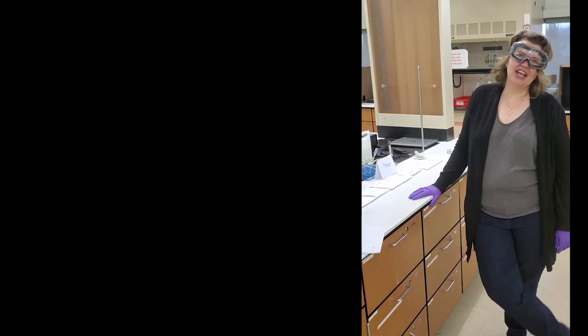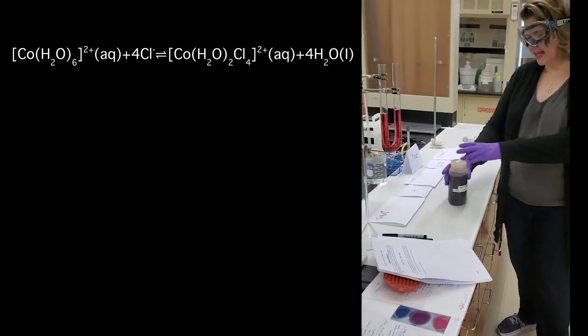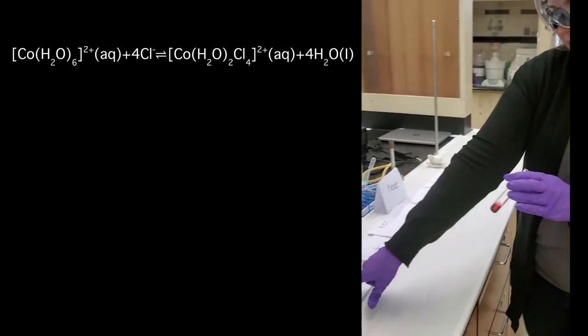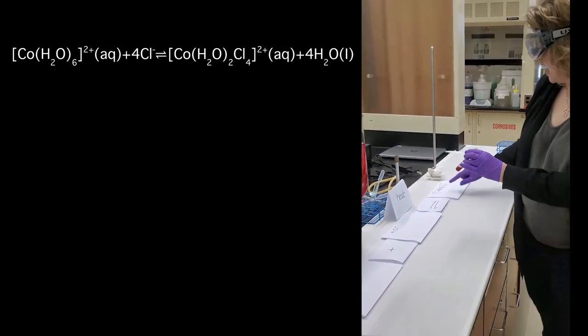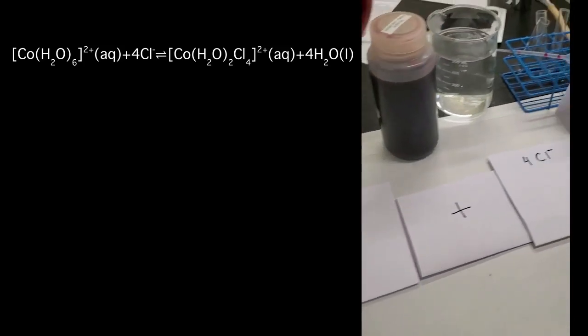Our final Le Chatelier's Principle system we're going to look at is cobalt with cobalt fluoride. Here I already have a solution of cobalt chloride that's diluted for us to take a look at. Some students say this is a raspberry or burgundy color. Right now we have a combination — this is cobalt chloride — a mixture of the cobalt hexahydrate and the cobalt that has four chlorines in it, and it's a mixture of these colors.